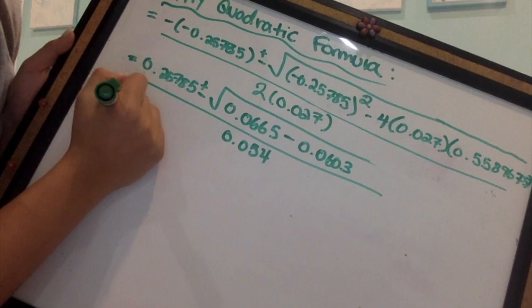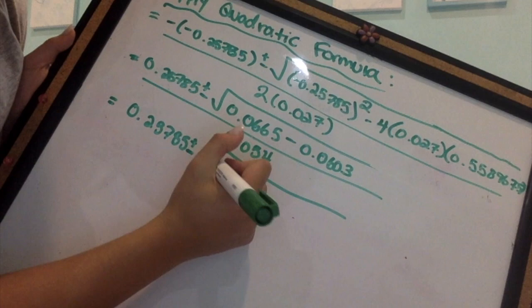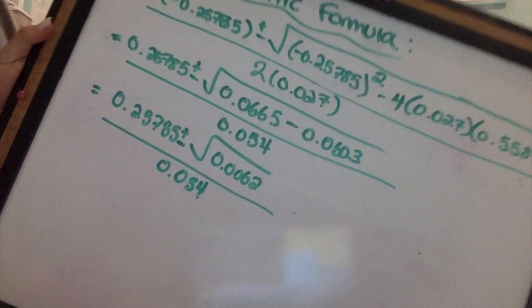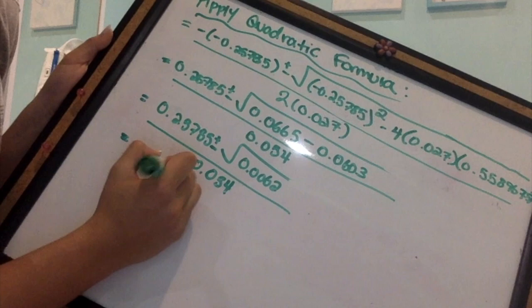Please note that there is going to be two answers in this final step because there is a plus or minus in the equation. Remember to pay close attention to your restrictions because it is possible to get a number that is within your restrictions. So you cannot use that number, that will be the wrong answer.